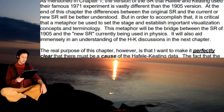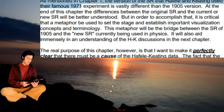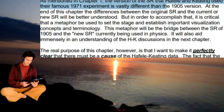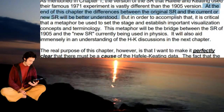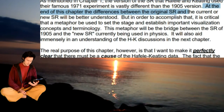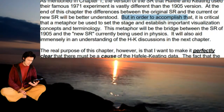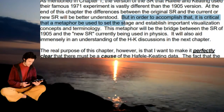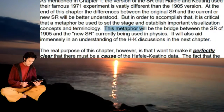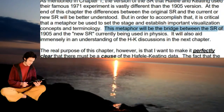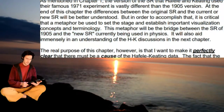Introduction: As mentioned in chapter one, the version of special relativity that the Hafele-Keating experiment used in the famous 1971 experiment is vastly different from that of the 1905 version. At the end of this chapter, the differences between the original special relativity and the current or new special relativity will be clearly understood. But in order to accomplish that, it is critical that a metaphor be used to set the stage and establish important visualization concepts and topology. This metaphor will be the bridge between the special relativity of 1905 and the new special relativity currently being used in physics.